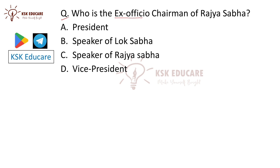The next question is: Who is the Ex-Officio Chairman of Rajya Sabha? The correct answer is the Vice President — the Vice President is the Ex-Officio Chairman of Rajya Sabha. That is Option D.